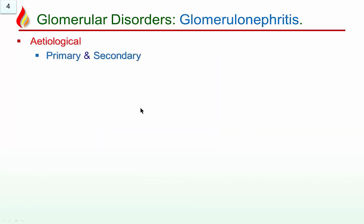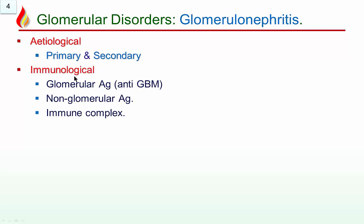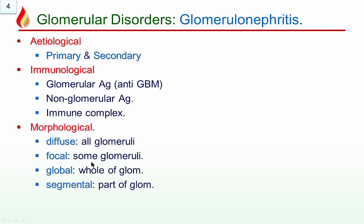Glomerular disorders are classified according to etiology: primary damage to the glomerulae, or secondary damage in other diseases. The immunological cause is commonest — anti-GBM antibodies, or non-glomerular antigens sitting on the glomerulae then forming complexes, or antigen-antibody complexes already formed in the blood causing injury by entrapment of immune complexes in the glomerulae. Morphologically: diffuse, focal, global, segmental — I will describe more later.